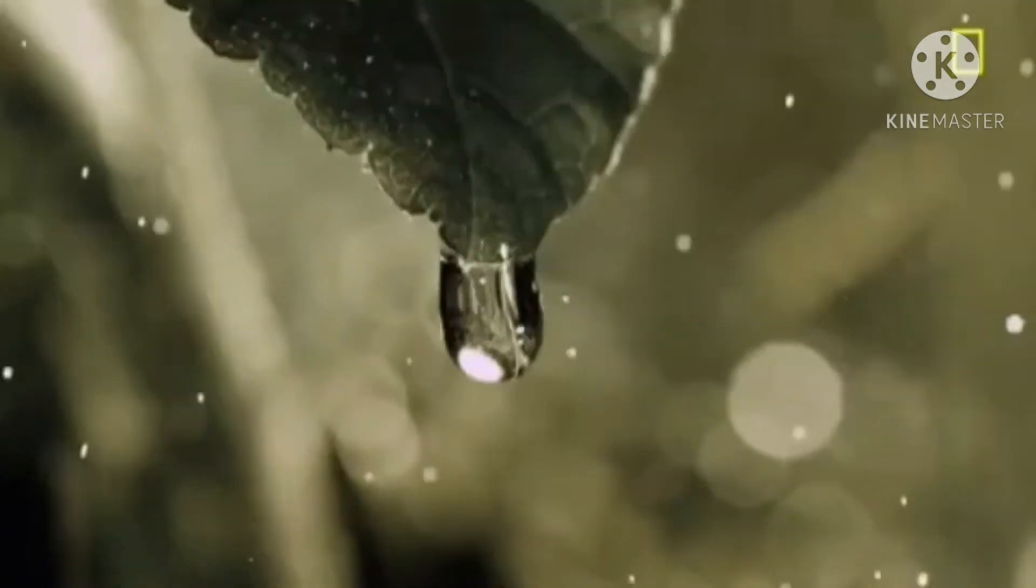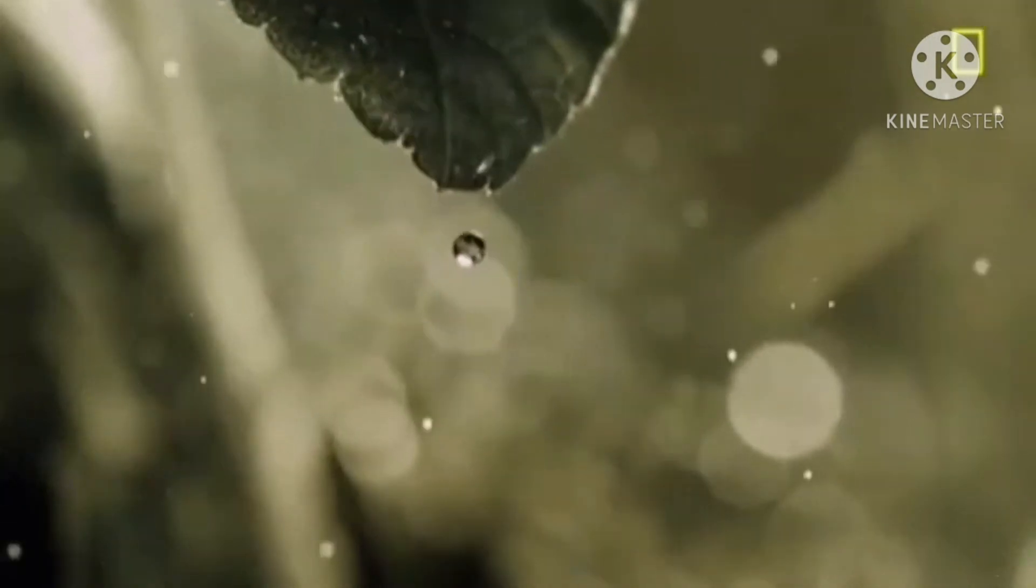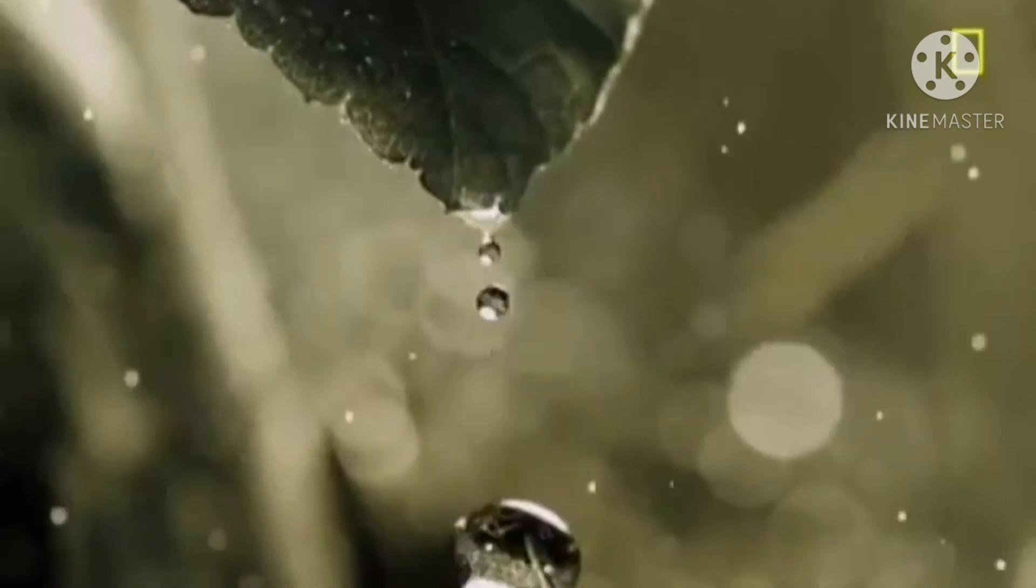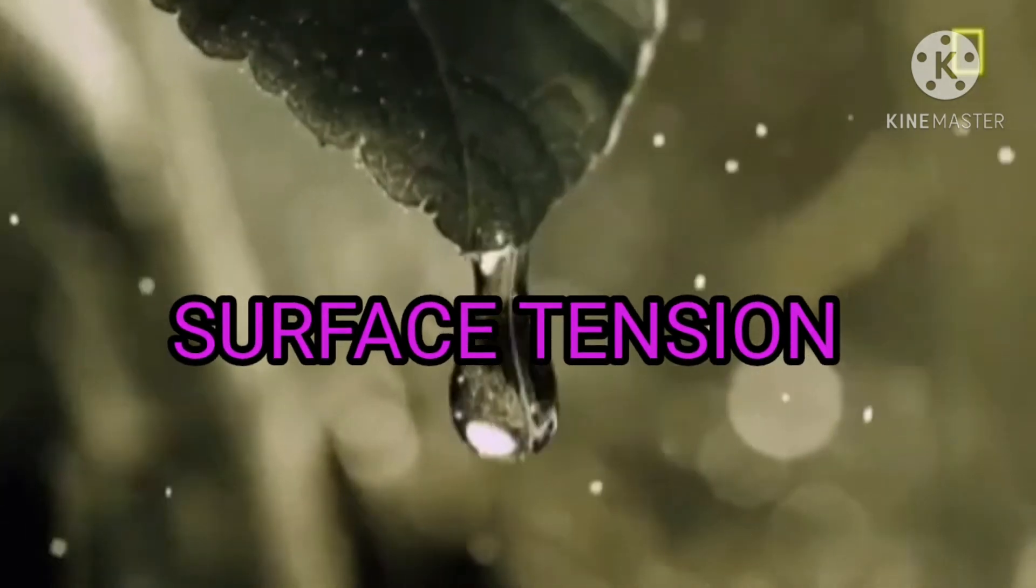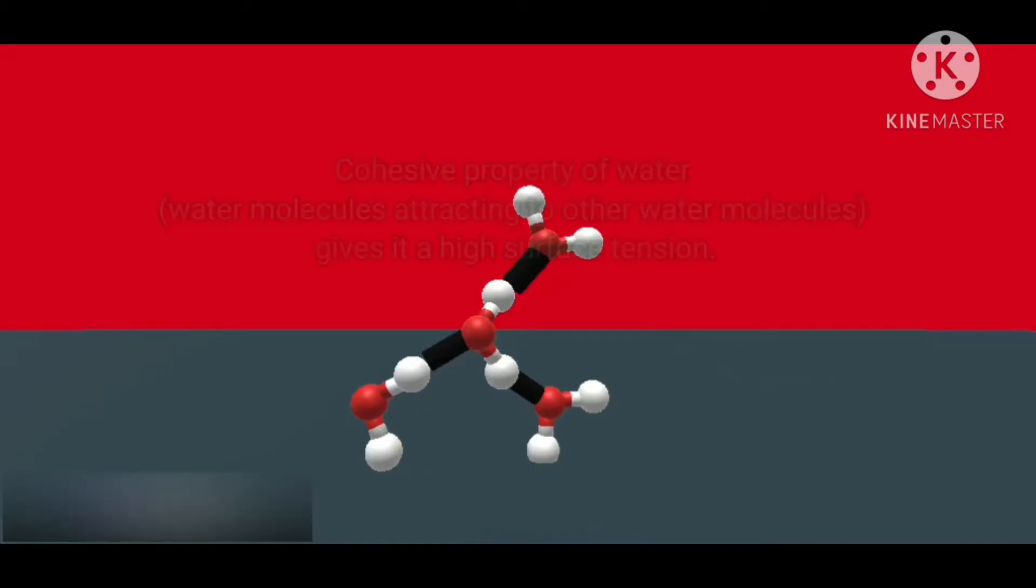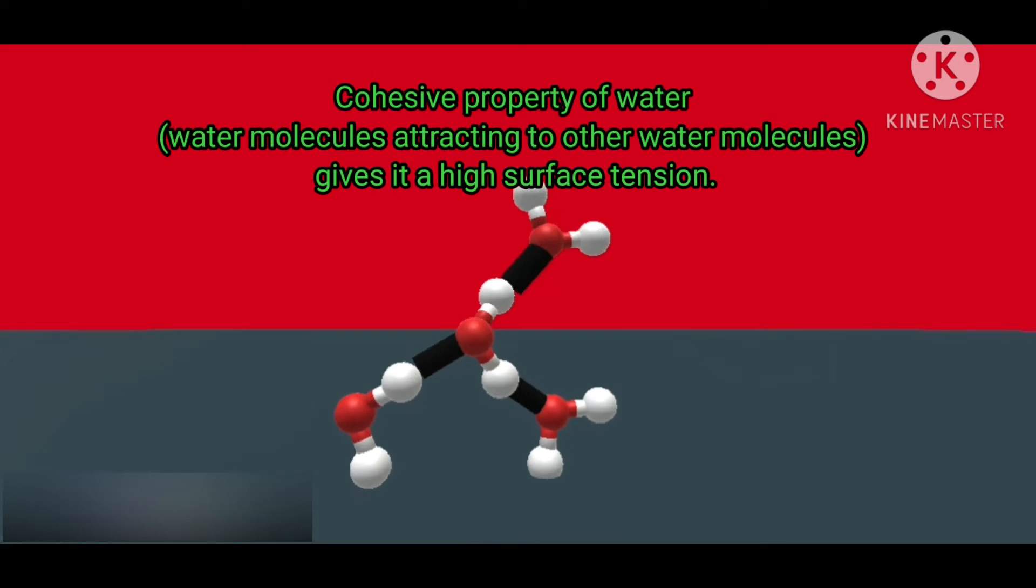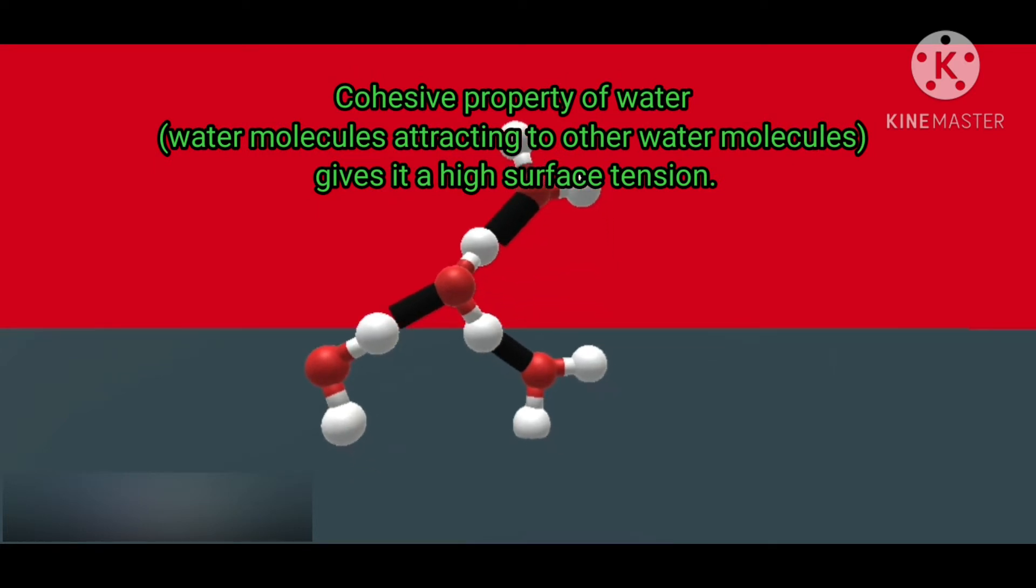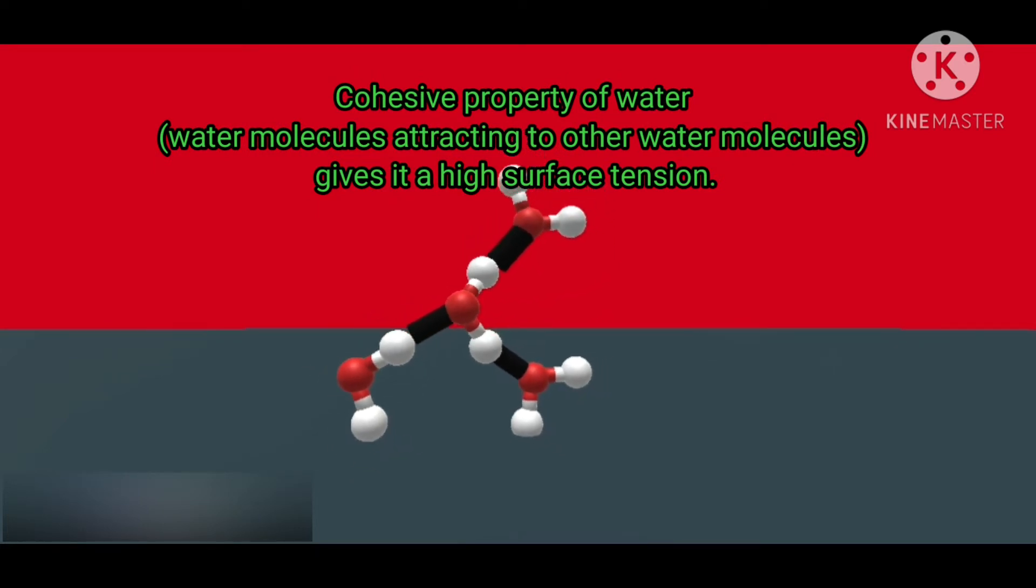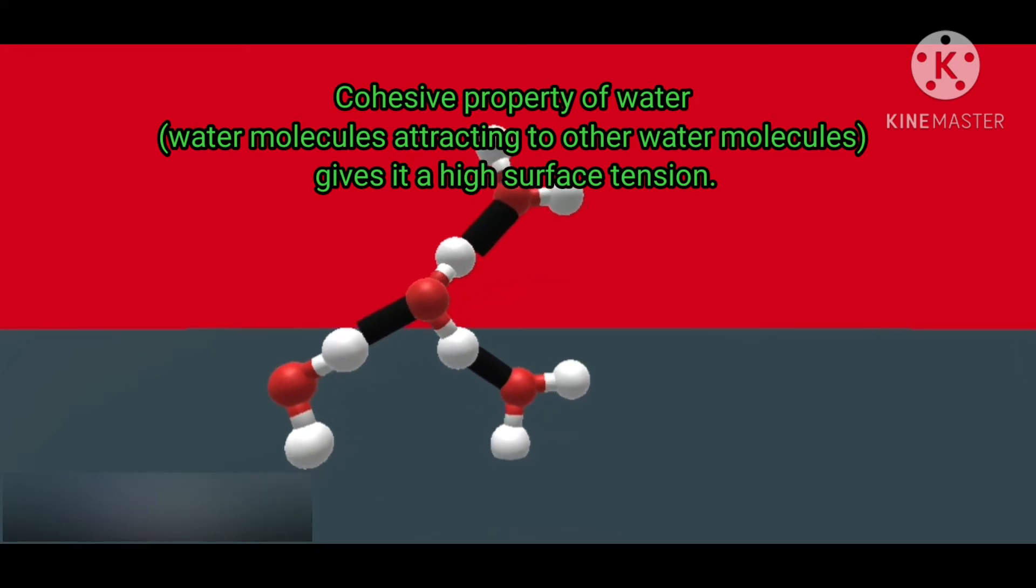Water drops are spherical in shape due to a phenomenon called surface tension. The cohesive property of water, where water molecules attract to other water molecules, gives it a high surface tension.